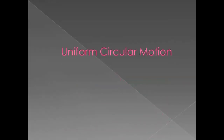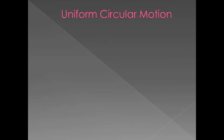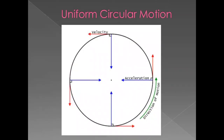Uniform circular motion. If an object moves in a circular path with constant velocity, its motion is called uniform circular motion. In uniform circular motion the speed is constant but the direction of motion keeps on changing, so we call it accelerated motion. If an object completes one round in time interval t, the distance covered in one round will be 2πr, so the speed will be 2πr upon t.